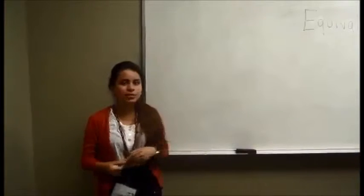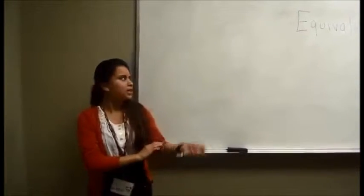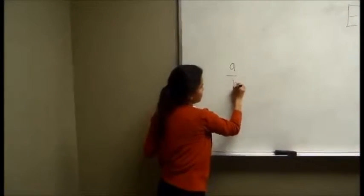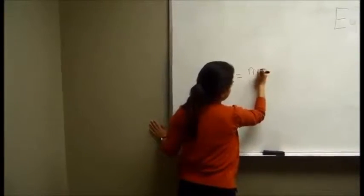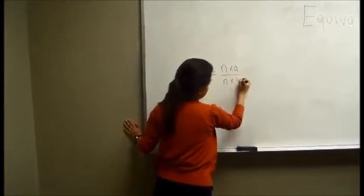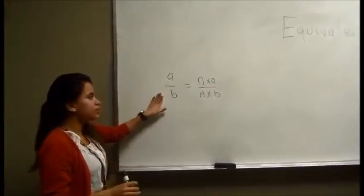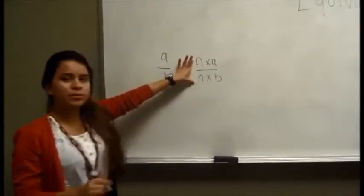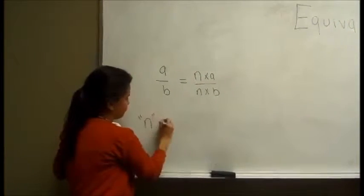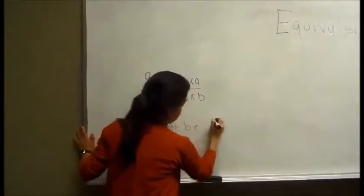In conclusion, I am going to give you guys an equation that will sum everything up. The equation is: a over b is equal to n times a over n times b. Where a is any number, b is any number, and n is a number that cannot be zero. So n cannot be zero.